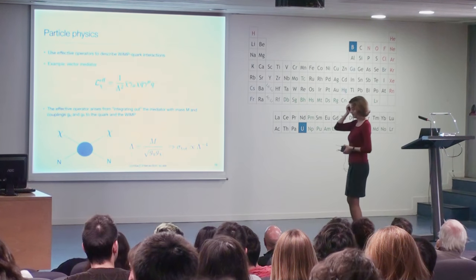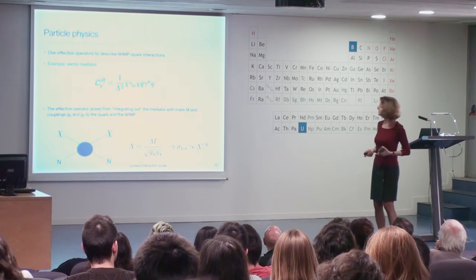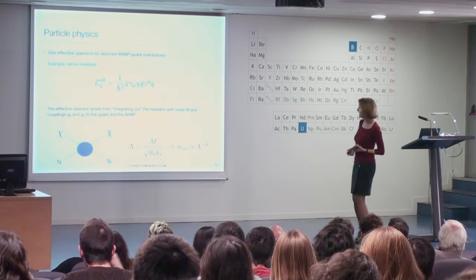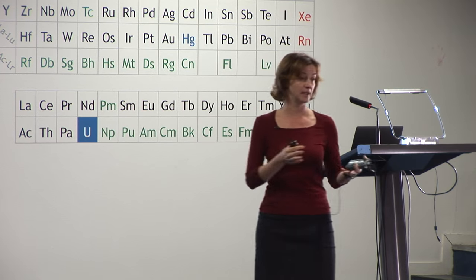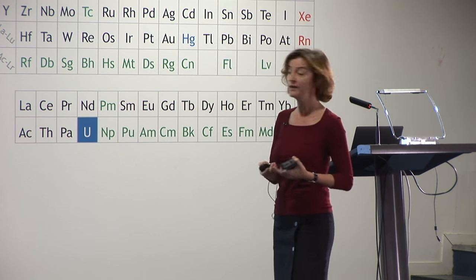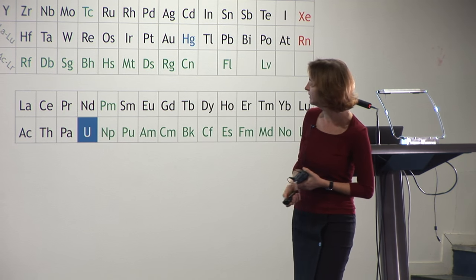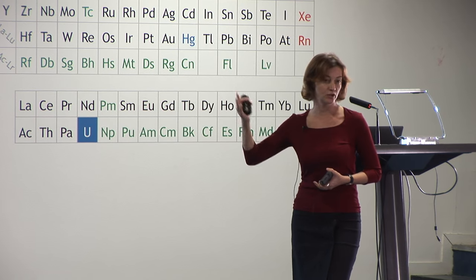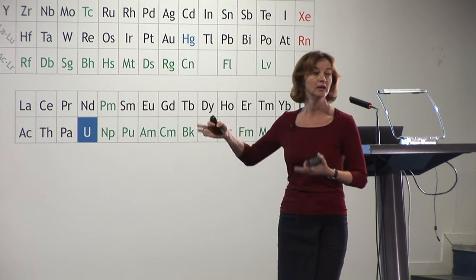For direct detection, we use so-called effective operators to describe WIMP-quark interactions. For instance, you can have a vector mediator or axial vector mediator. This is an effective Lagrangian where, just like in Fermi theory, you integrate out the mediator to get a contact interaction scale. The total cross-section scales as one over this scale to the fourth power — similar to the Fermi scale in weak interactions, where you have the mass of the mediator and the couplings. So if the scale is around a TeV or so, you don't expect a large cross-section.